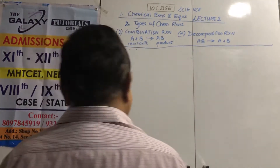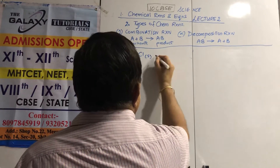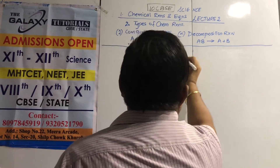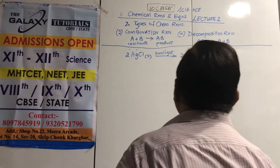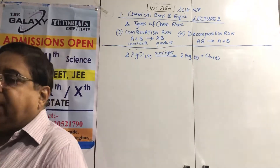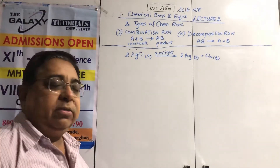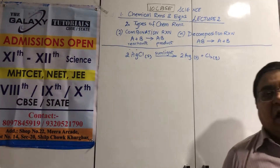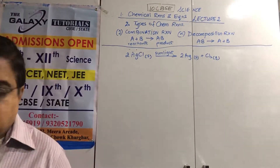Another decomposition reaction: silver chloride solid in sunlight gives silver solid plus chlorine gas. This is a favorite reaction because it is the basis of photographic plates and film reels. When silver chloride was exposed to sunlight, it decomposed into silver, which turned black, creating the photographic image.